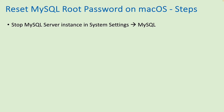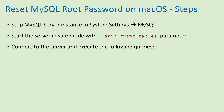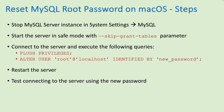Here are the overview steps in order to reset MySQL root password on a Mac computer. Firstly, you need to stop the MySQL server instance if it is running, in System Settings under MySQL. Then start the server in safe mode with the skip-grant-tables parameter. Then connect to the server and execute the following queries to reset the root password. Then restart the server and test connecting using the new password.